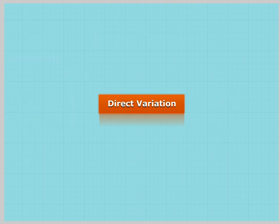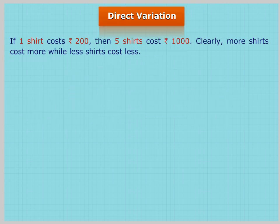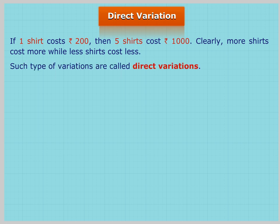Direct Variation: If one shirt costs Rs. 200, then five shirts cost Rs. 1000. Clearly, more shirts cost more while less shirts cost less. Such types of variations are called Direct Variations.